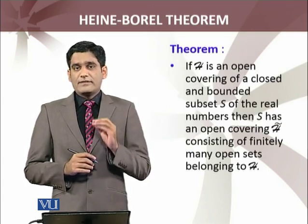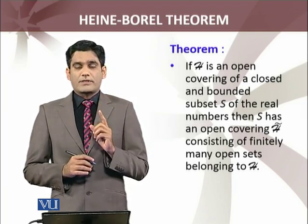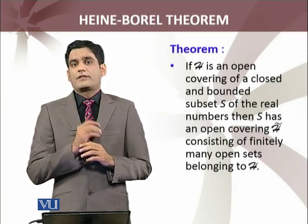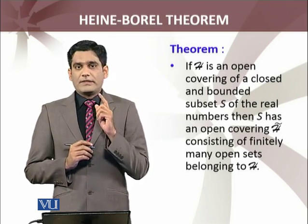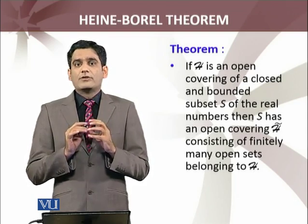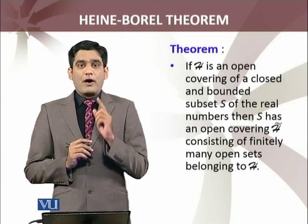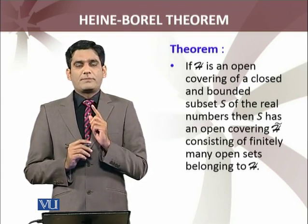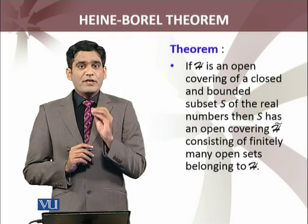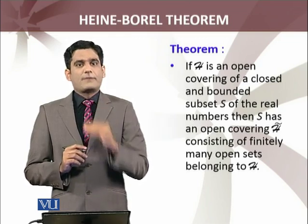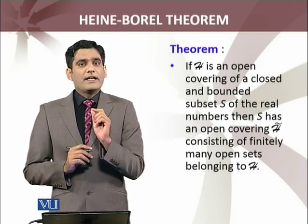The theorem states that if H is an open covering of a closed bounded set of real numbers — this is very important: the closed bounded set of real numbers — and H is an open covering. As we have seen in the last example, an open covering is not necessarily a finite set. But if a subset of real numbers is closed and bounded, and you have an open covering for it, then there must be a sub cover — a subset of that open covering — which contains finitely many elements.